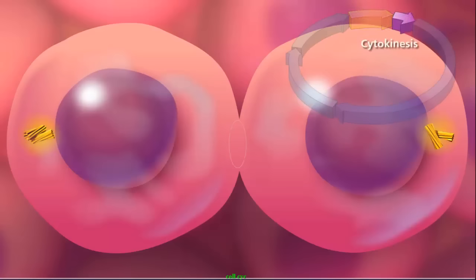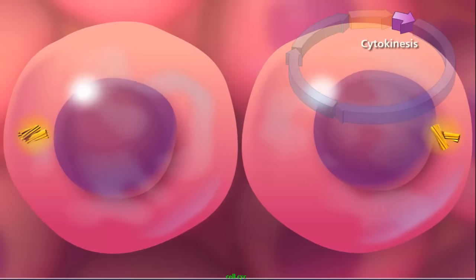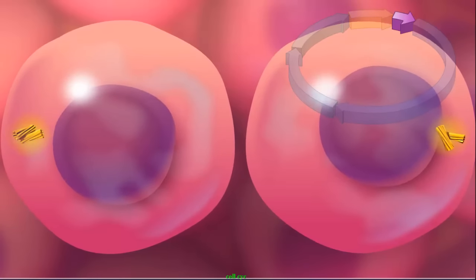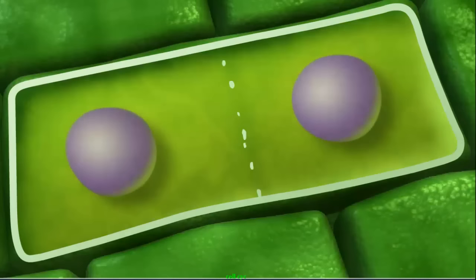In animal cells, cytokinesis completes cell division by extending the cleavage furrow to completely separate the newly formed daughter cells.